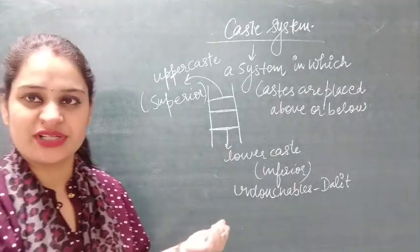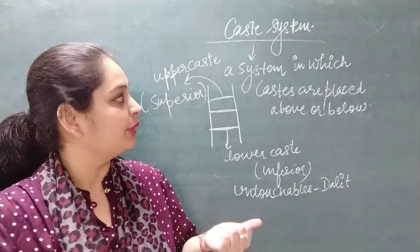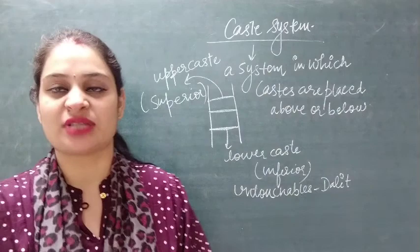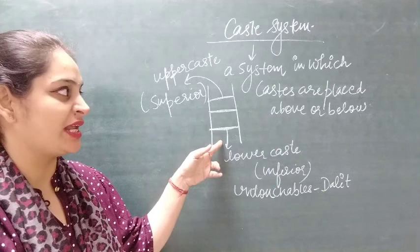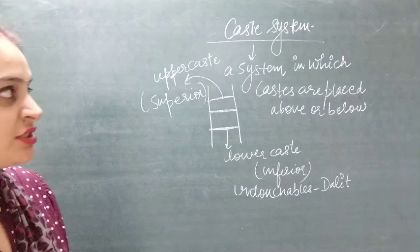Now we discuss what is caste system. Caste system is a system in which castes are placed above or below. Some castes are placed in the society like a ladder, where lower caste is placed below and upper caste is placed above.